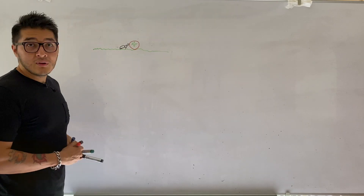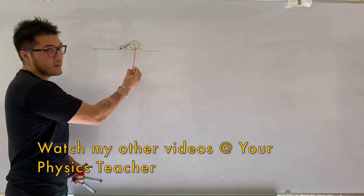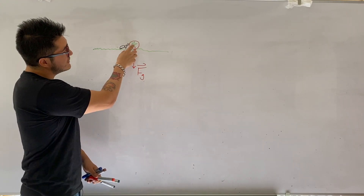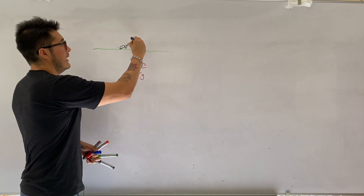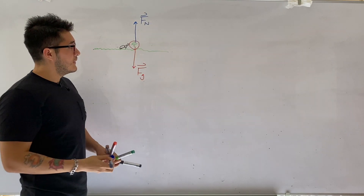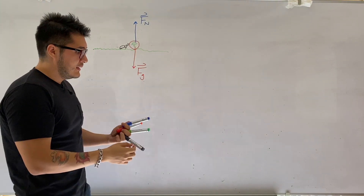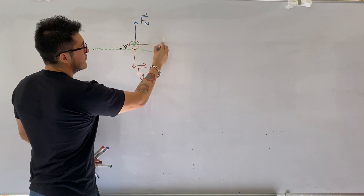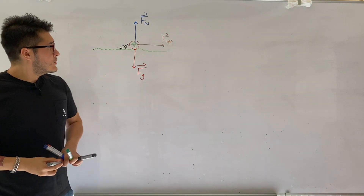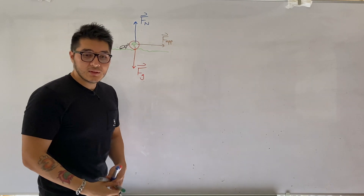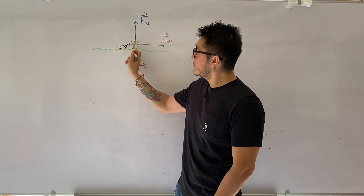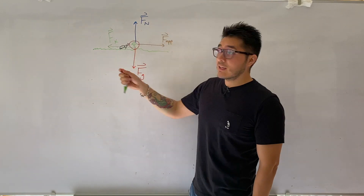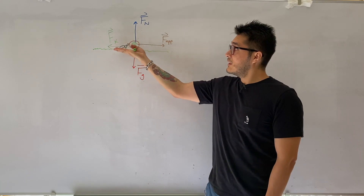We need to identify the forces acting on the tomato, going back to the second unit. We always have the force of gravity as long as we're on Earth with a mass acting on the tomato. Because the tomato is on a surface, we have the normal force, which is always perpendicular to the surface. Because the ant is pushing the tomato, there's an applied force directly to the right. And since it's a rough surface, there's kinetic friction opposing the direction of motion — kinetic because the tomato is constantly making contact with the surface as it moves.